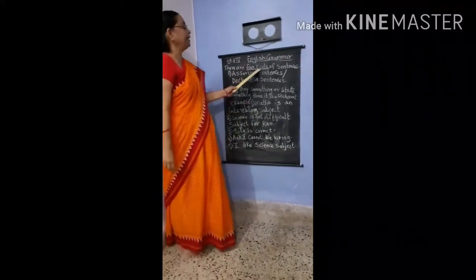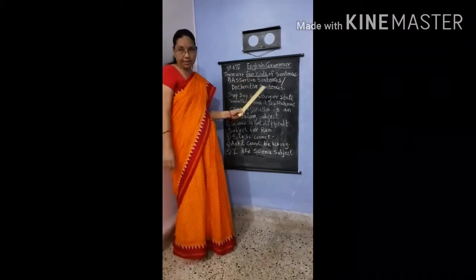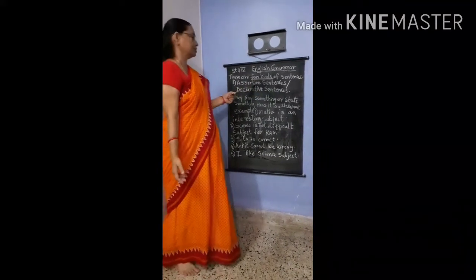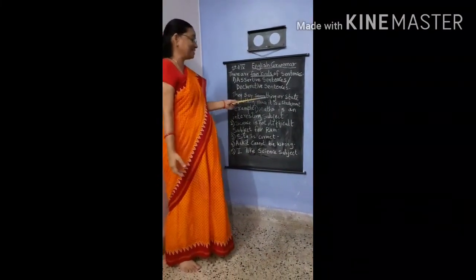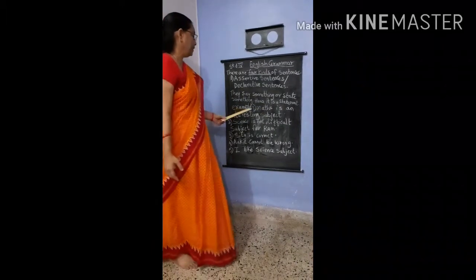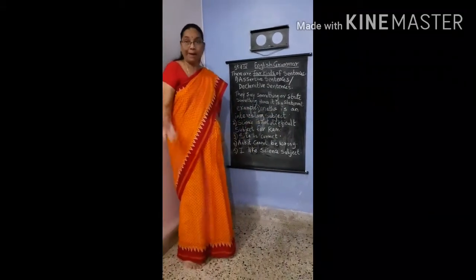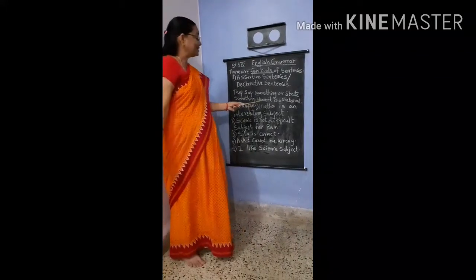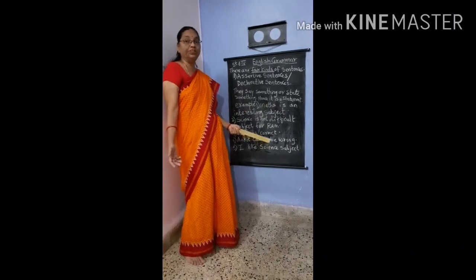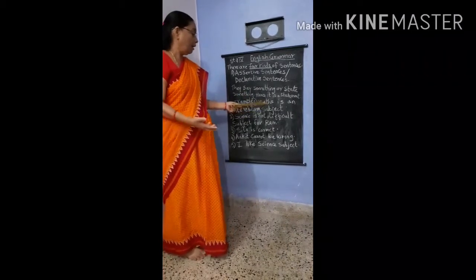Hence, there are four kinds of sentences. First, we go to the assertive sentence, also known as the declarative sentence. Both names mean the same — they say or state something, hence it is a statement. Example: 'Maths is an interesting subject.' So here something is told about maths — how it is, it is an interesting subject.